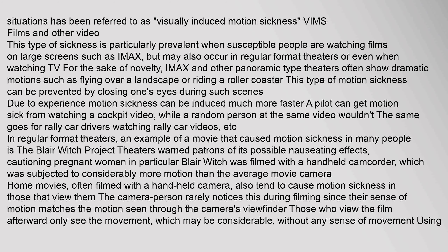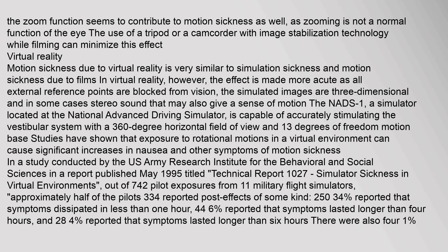In regular format theaters, an example of a movie that caused motion sickness in many people is The Blair Witch Project — theaters warned patrons of its possible nauseating effects, cautioning pregnant women in particular. Blair Witch was filmed with a handheld camcorder subjected to considerably more motion than the average movie camera. Home movies, often filmed handheld, also tend to cause motion sickness in viewers. The camera person rarely notices this during filming since their sense of motion matches what is seen through the viewfinder. Using the zoom function also seems to contribute to motion sickness, as zooming is not a normal function of the eye. The use of a tripod or image stabilization technology can minimize this effect.